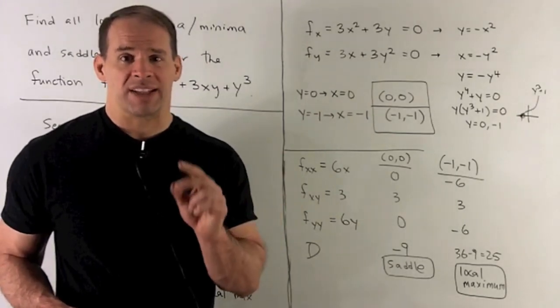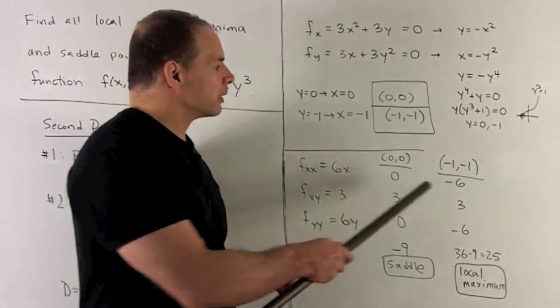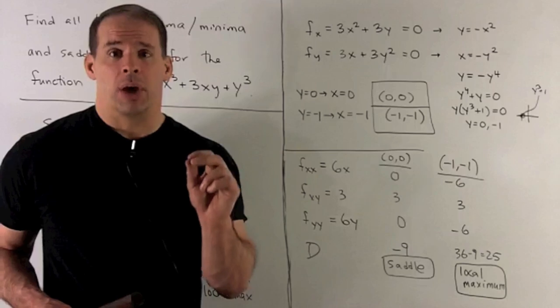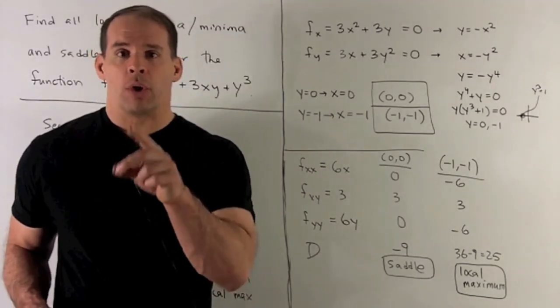That's positive. So, I have to check the sign on second partial with respect to x. That's negative. So, that means concave down. So, we have a local maximum.